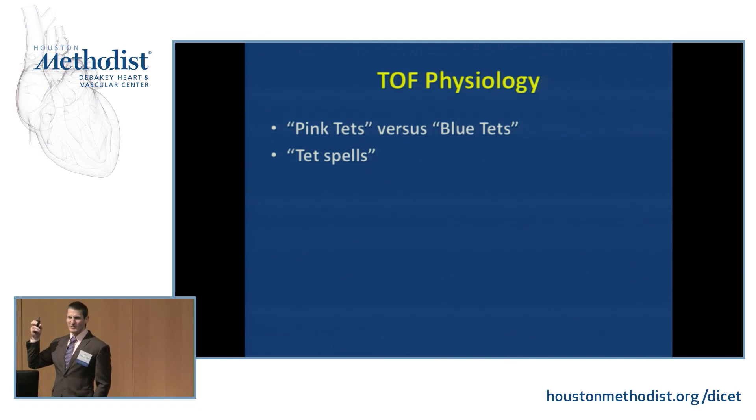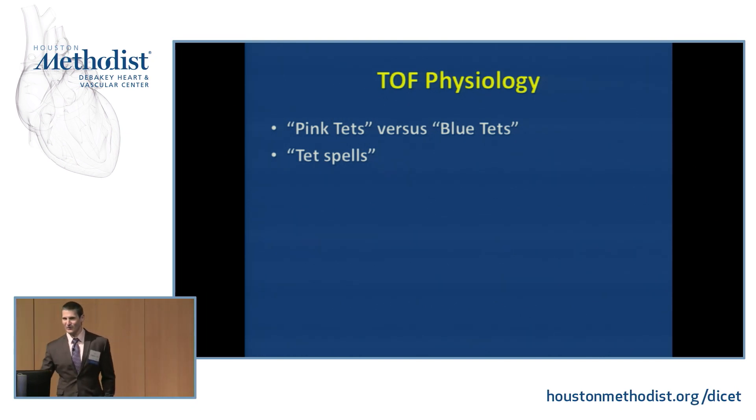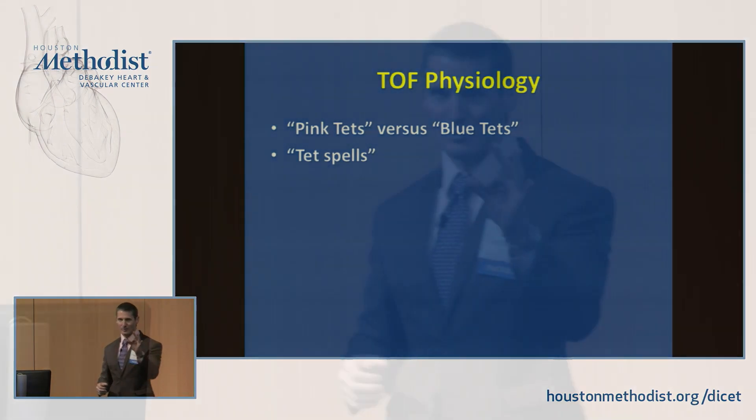If you remember hypertrophic obstructive cardiomyopathy, obstruction becomes worse when the ventricle is less filled or when ventricular contractility increases. So when a child with Tetralogy of Fallot gets upset, their right ventricular contractility increases, and that muscular infundibulum just below the pulmonary valve contracts harder, increasing outflow tract obstruction and driving deoxygenated blood across the VSD and out the aorta — they get cyanotic. What kids do is squat. By squatting, they increase venous return to the right ventricle, which relieves some of that outflow tract obstruction, and they can become pink again.